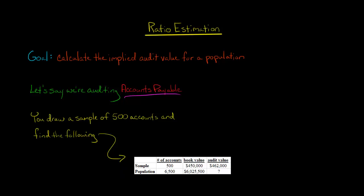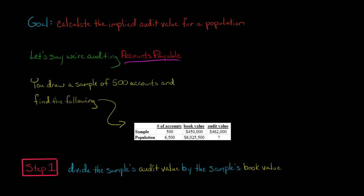So with ratio estimation, it's a simple two-step procedure. What we're going to do is take the sample's audit value, which is 462,000, and divide it by the sample's book value, and that's going to give us a ratio. So let's take $462,000 divided by 450,000.